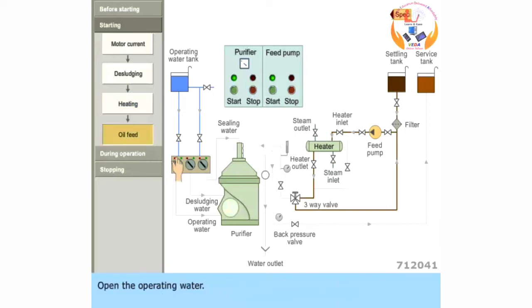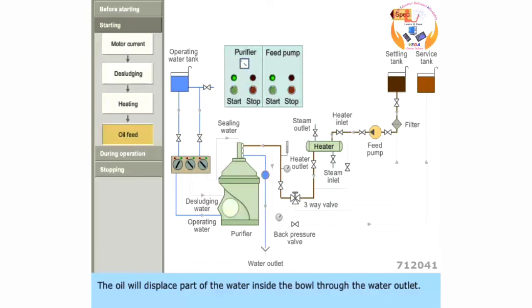Open the operating water. Open the sealing water until it overflows from the water outlet. Open the oil feed by positioning the three-way feed valve to the purifier. The oil will displace part of the water inside the bowl through the water outlet. The purified oil flows from the purifier to the service tank.